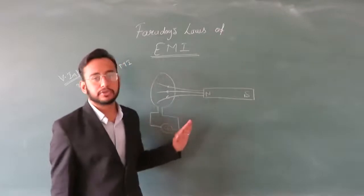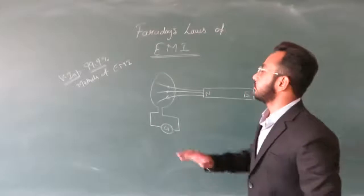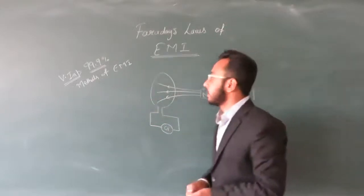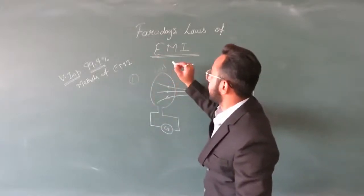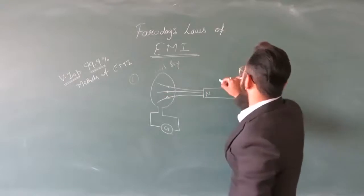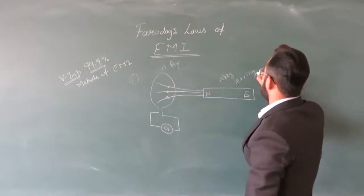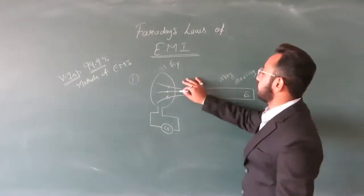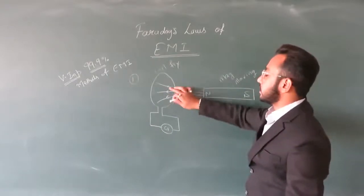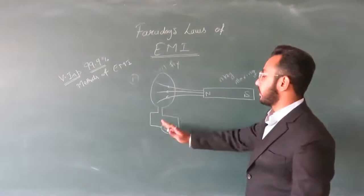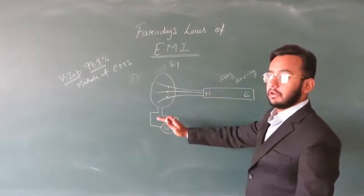The first method is to take the coil. In the first method, as the magnet moves forward, the number of field lines will increase. It will increase on the left side and the other sides as well.